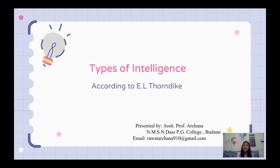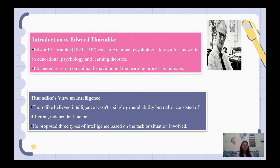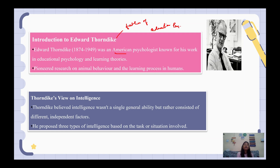E.L. Thorndike has given the types of intelligence. Before we learn about them, E.L. Thorndike is an American psychologist. He is the father of educational psychology. He has done a lot of work on animal behavior, learning processes, and learning theories.